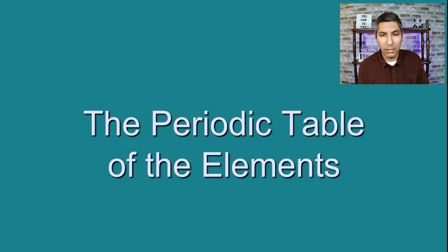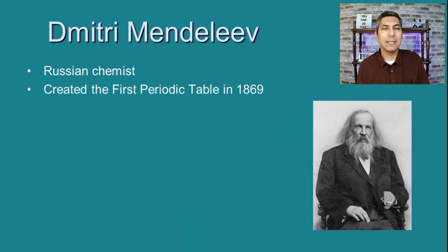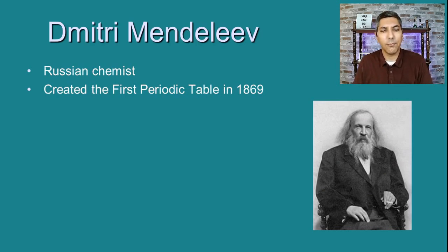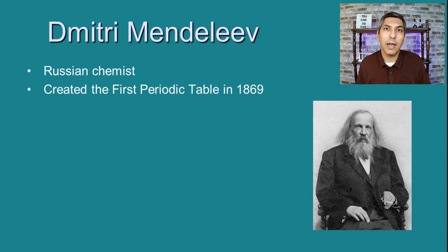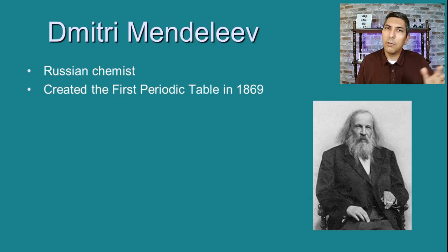As we talk about the periodic table of the elements, let's start by thinking about some history. If we go all the way back to around the year 1869, there was a Russian chemist by the name of Dmitri Mendeleev. We give him credit for creating the first periodic table of the elements back in 1869. Back then they did not know about all the elements we know about today — in fact they knew about maybe a little over 60 of the elements.